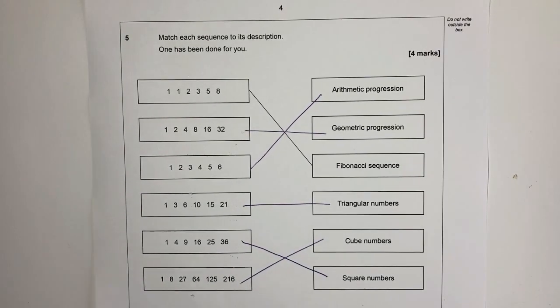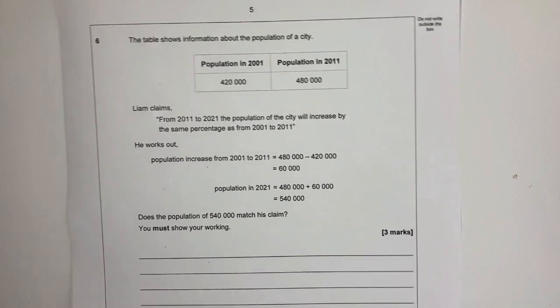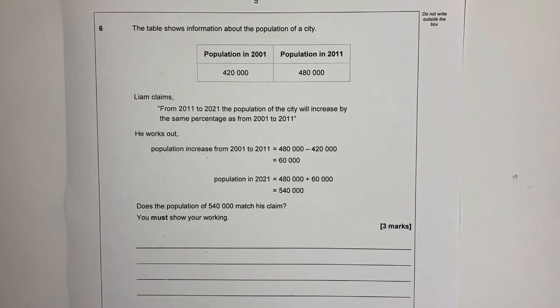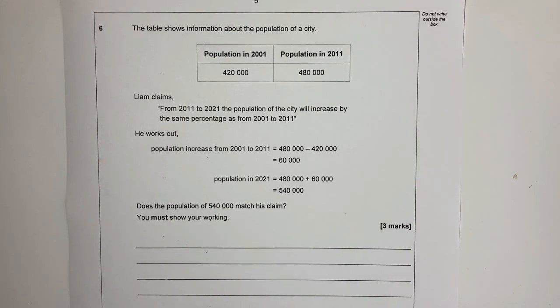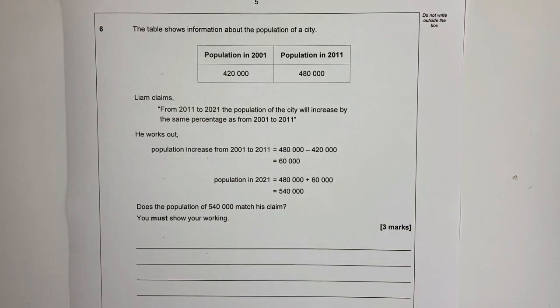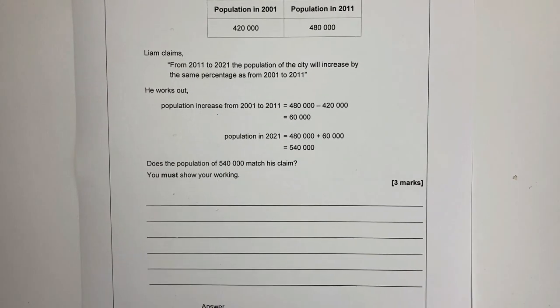Let's move on to question number six. It is a calculator paper, so you are able to use a calculator for each of these. Now that's a little bit more challenging and it's only three marks. The table shows the information about the population of a city, and it goes from 420,000 to 480,000 in a period of 10 years. From Liam's claim, the population will increase by the same percentage from 2011 to 2021. He works this out. So does the population of 540,000 match his claim? You must show your working.